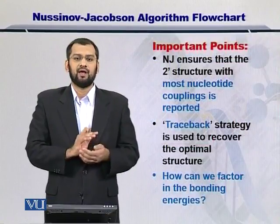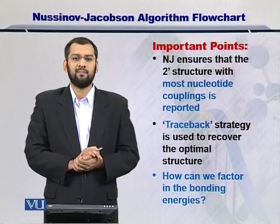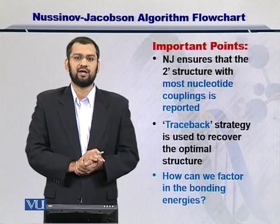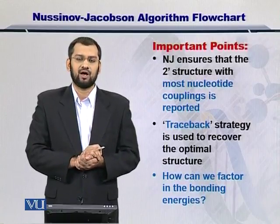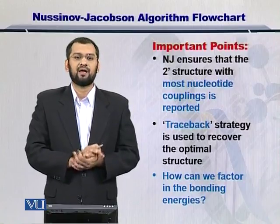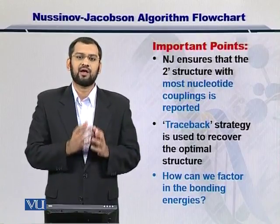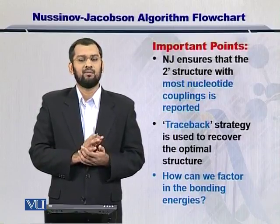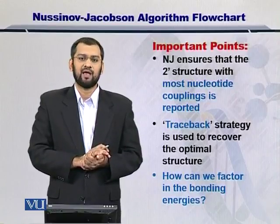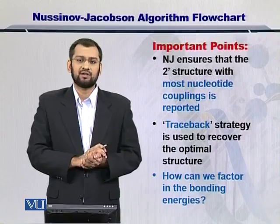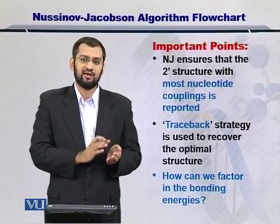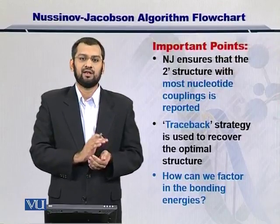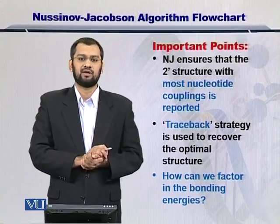So, dear students, the NJ algorithm ensures that there is a maximum coupling of the RNA nucleotides, which can help you to predict the secondary structure of the RNA molecule. The traceback strategy is used to extract meaning out of the scores that you have put into the matrix. But then, what can be an optimal traceback strategy? And how can you factor in the energies as well, besides the coupling? You can also look at how the bonding energies can affect the prediction of the secondary structure.